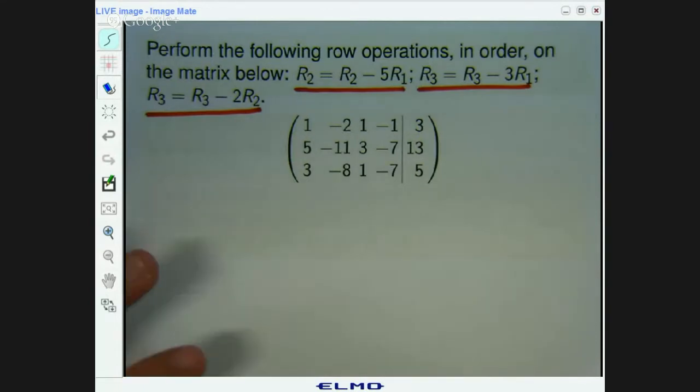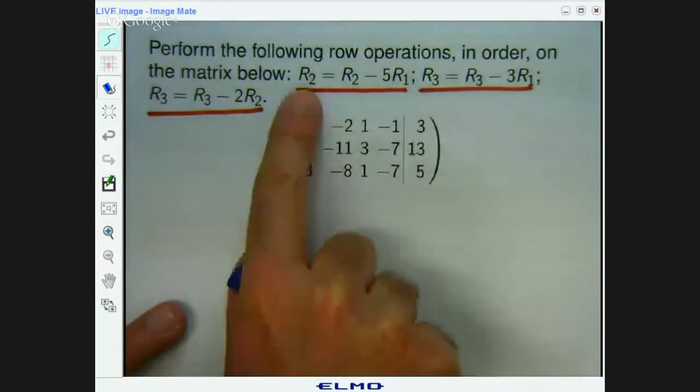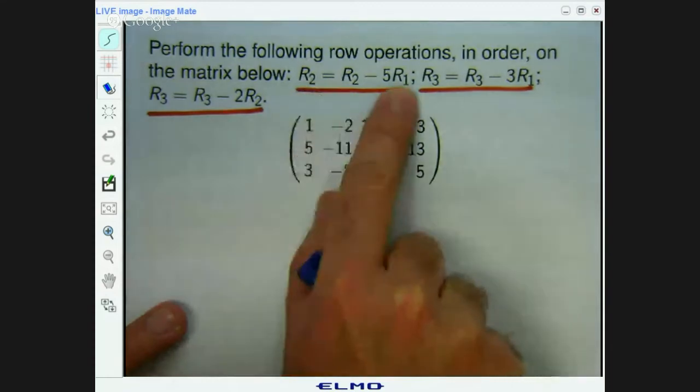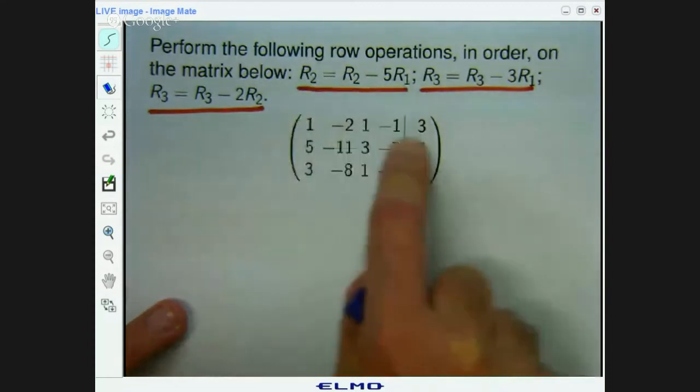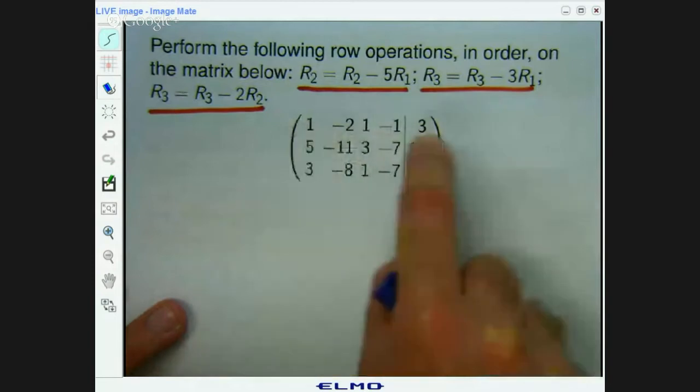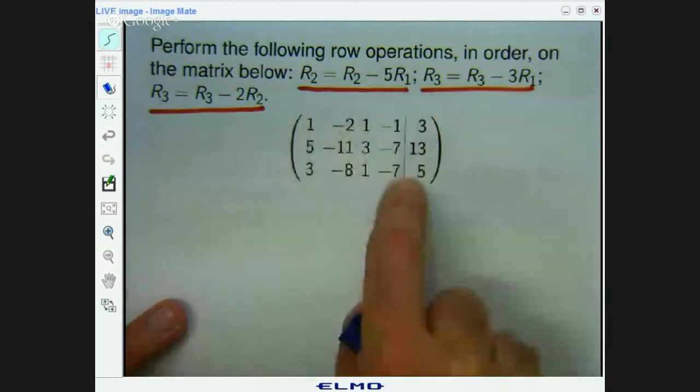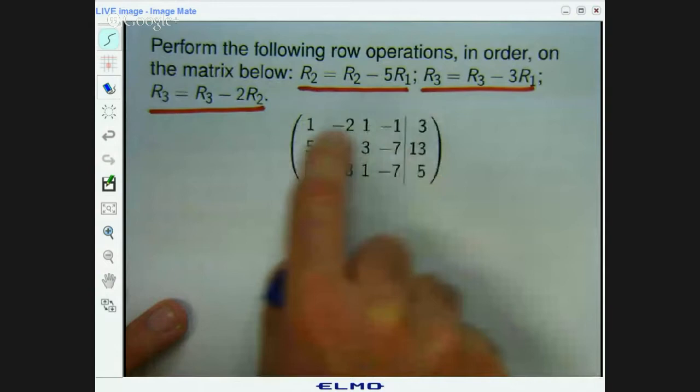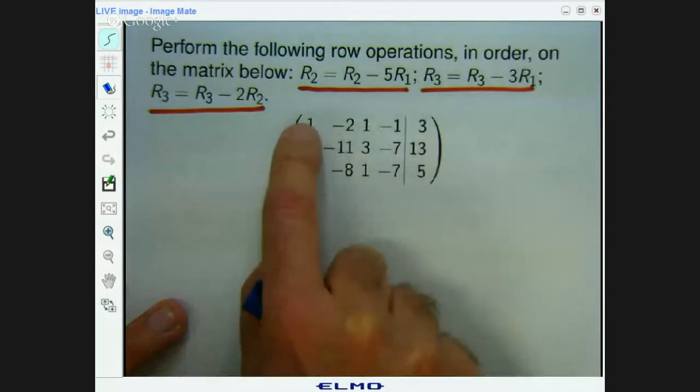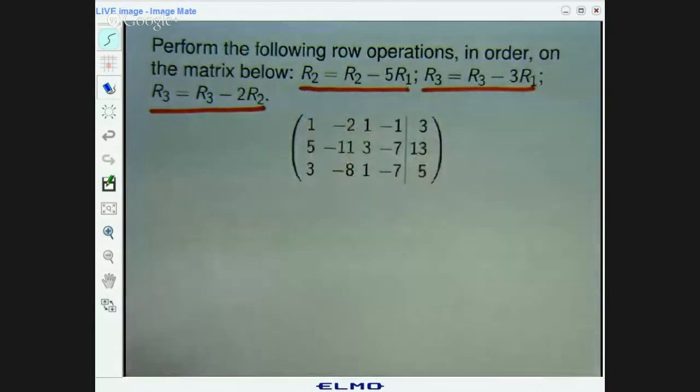Alright. So the first operation is row 2 equals row 2 minus 5 row 1. So we want to take row 2, the second row. Remember, rows go horizontally, columns go vertically. We want to take row 5... We want to take 5 times row 1 away from row 2.